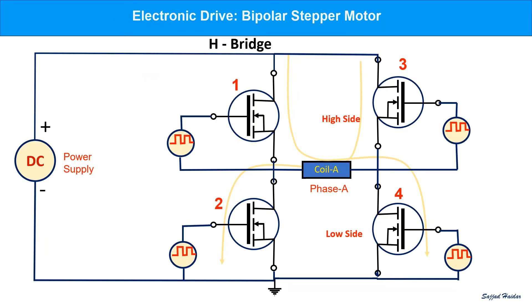Each coil of the motor should be driven by a circuit called H-bridge. An H-bridge consists of four electronic switches. Either bipolar junction transistors or MOSFETs can be used. When switches 1 and 4 are closed, current flow in one direction through the coil. And when the switches 3 and 2 are activated, current flow in the opposite direction. Though we are using DC source, however, the coil is experiencing AC now.